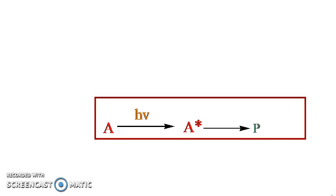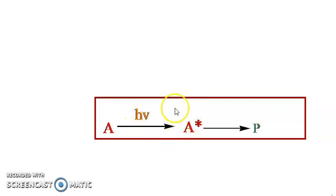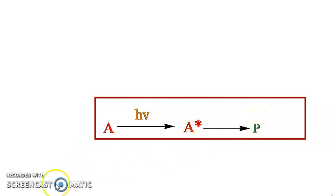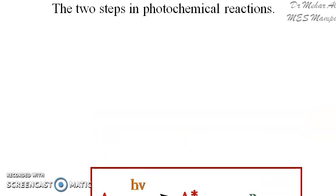A photochemical reaction can be designated by a general equation which involves a reactant absorbing light and forming an excited molecule, which then transforms to a product. It is this first step wherein the reactant absorbs light that involves the presence of light. The second process wherein the excited molecule gets transformed into a product does not require light. So, a photochemical reaction can be divided into two steps: the primary step and the secondary step.